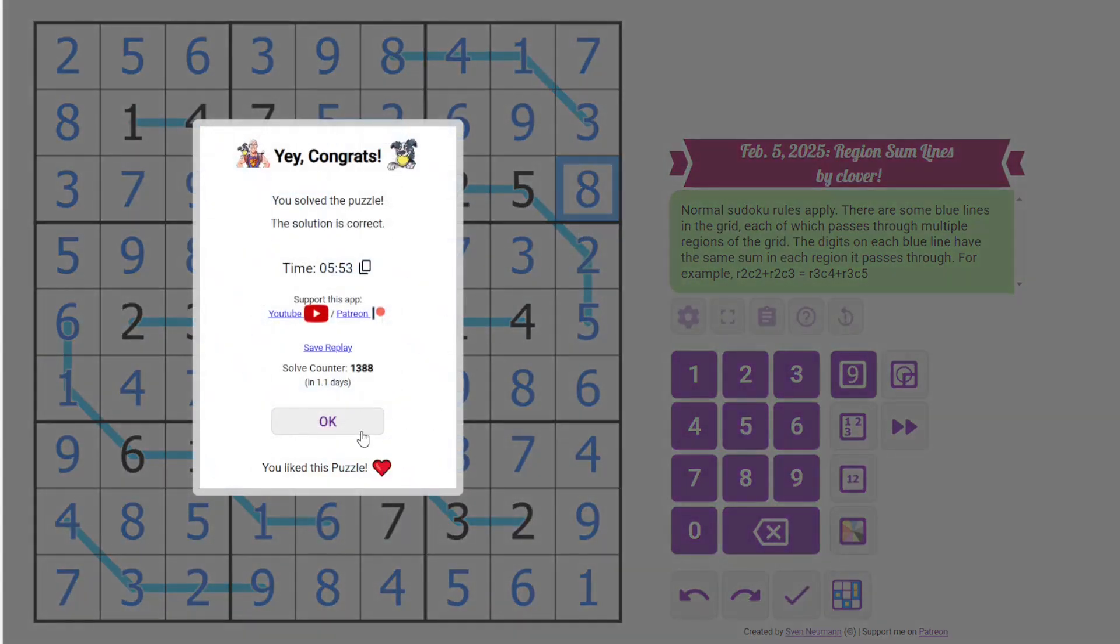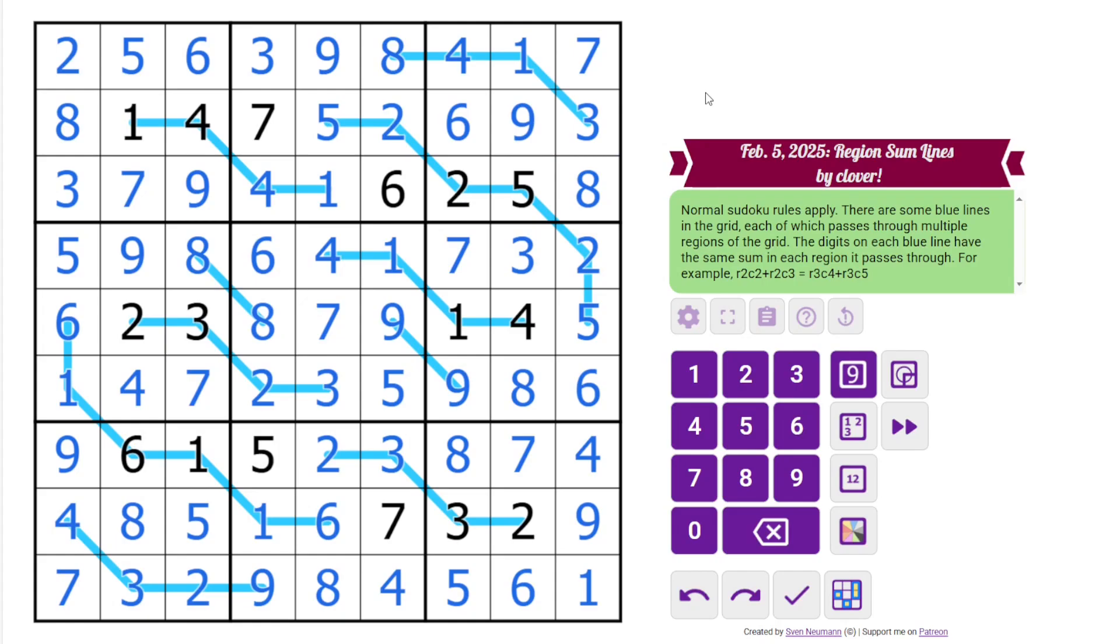That's the solution. So a really neat puzzle from Clover. Doing the low digits, getting all that resolved, and then resolving the high digits. Yeah, not a lot else to say. Let us know how you did in the comments, and I will see you next time.